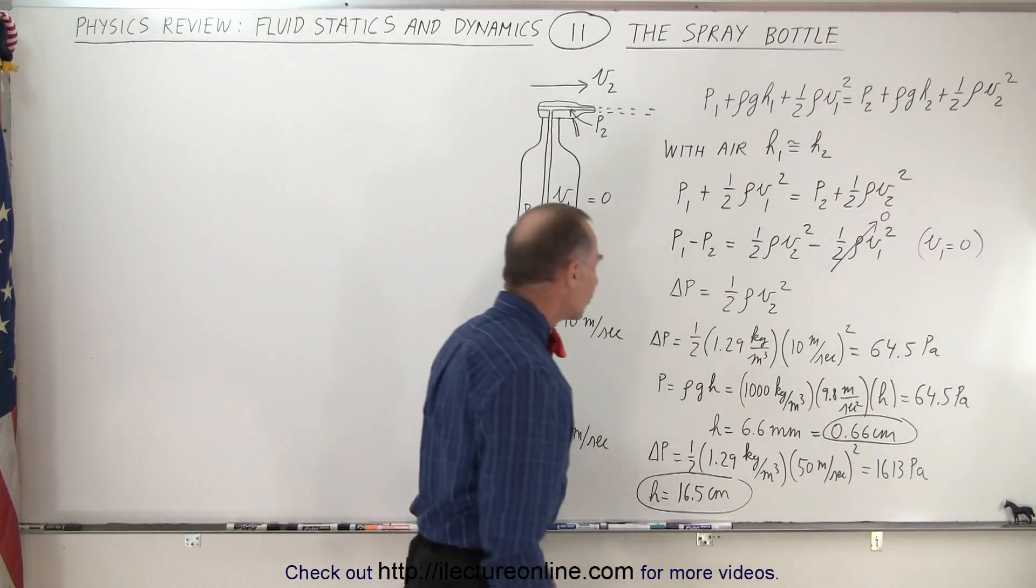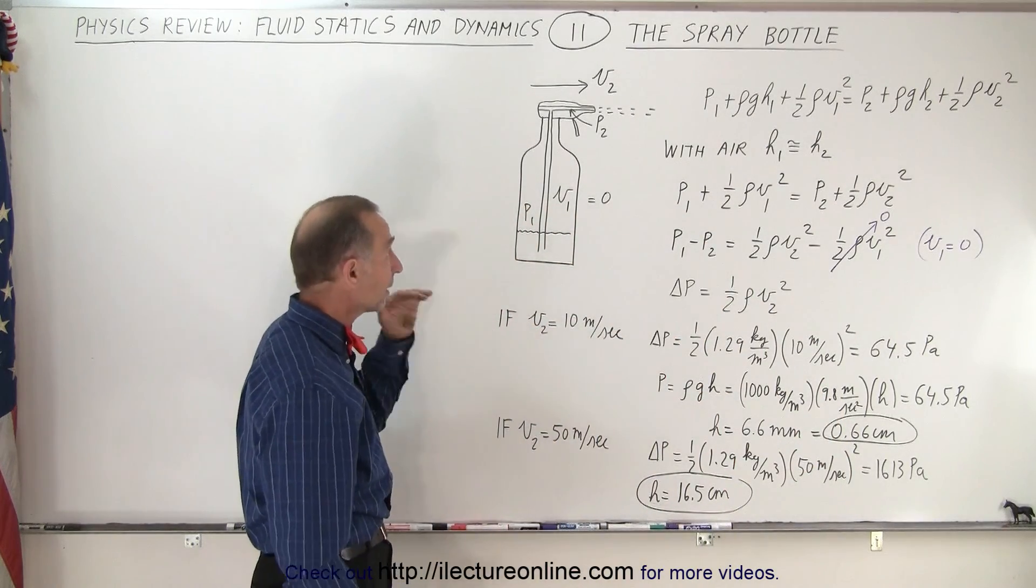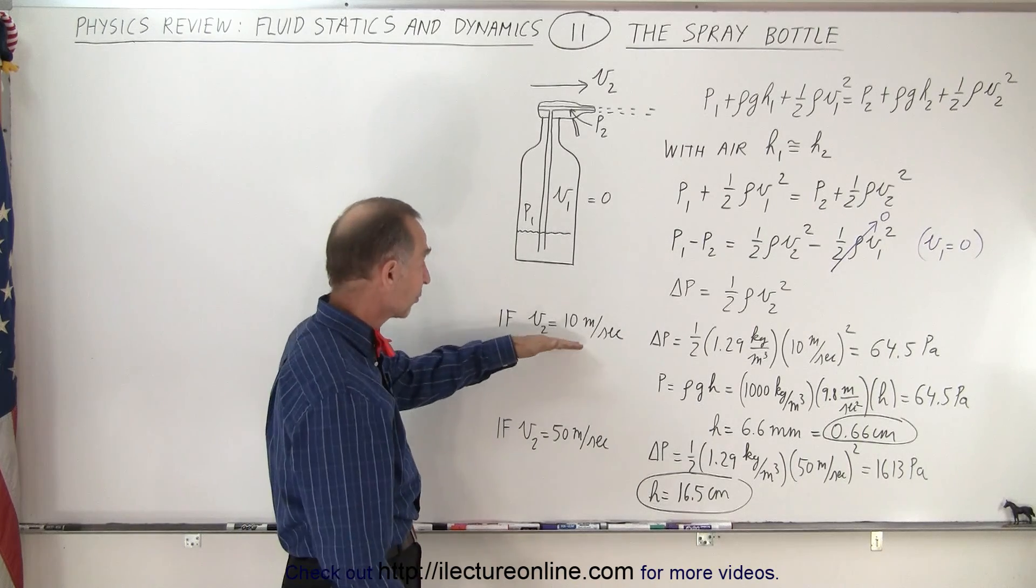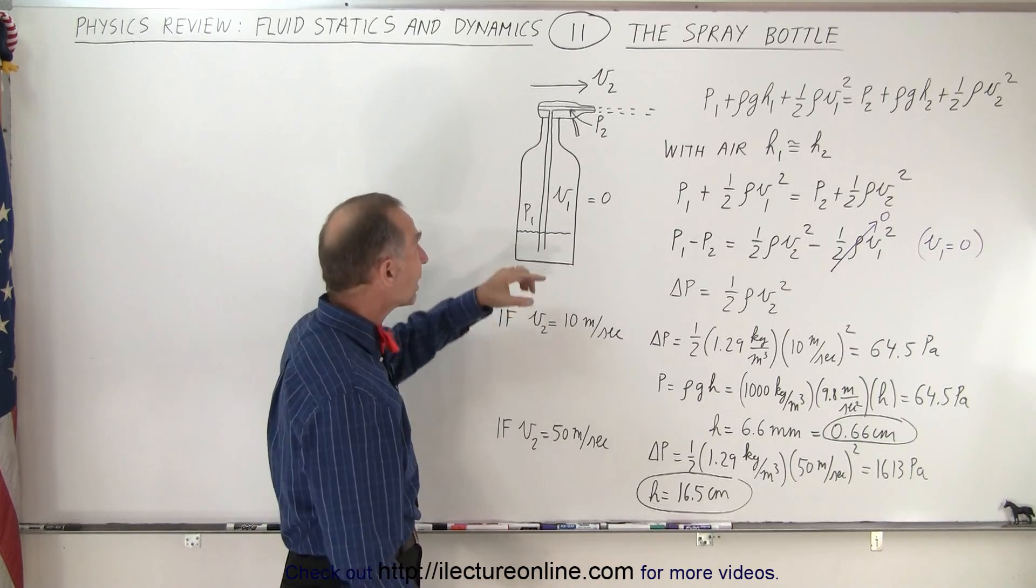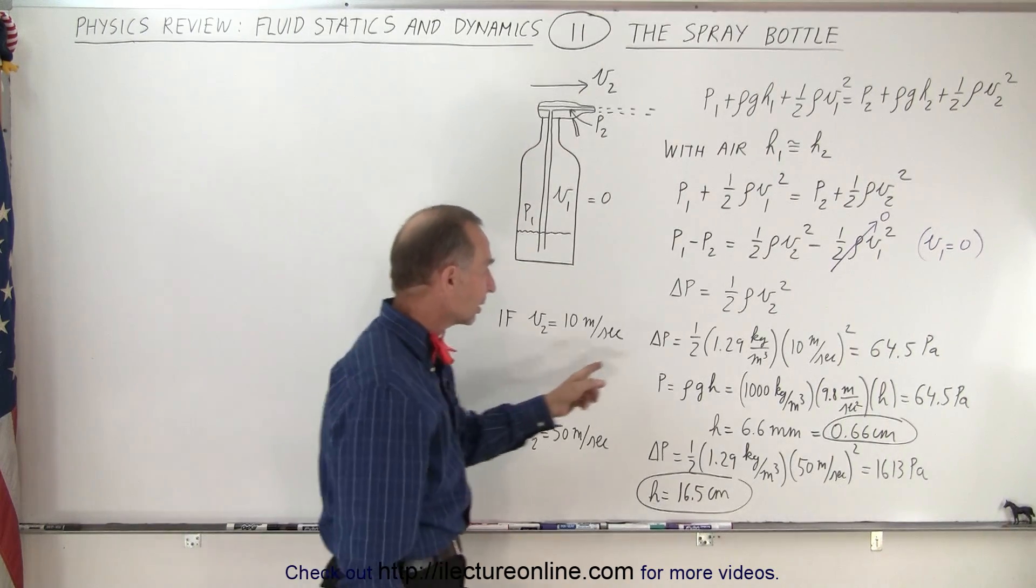Now if we use a velocity of 10 meters per second, you say wow that's quite a bit, that's as fast as a fast sprinter can run. What would be the difference in pressure between here and here? And if you calculate that, the difference in pressure would then be 64.5 Pascals.